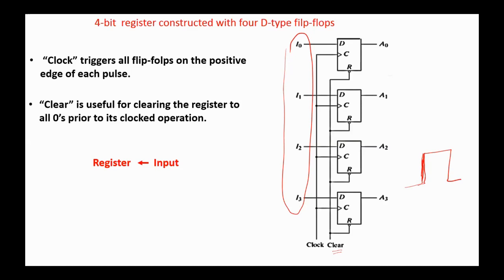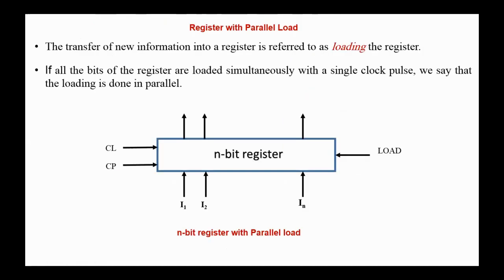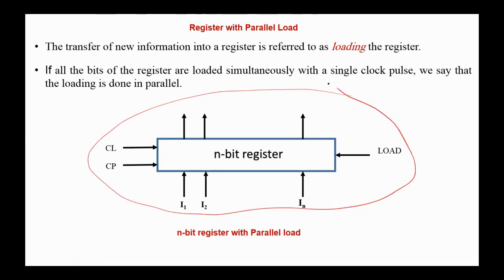As you see in this circuit, we have no control or load signal applied to the flip-flop. This is the general structure of an N-bit register with parallel load. It has N inputs and, in addition to the clear and the clock pulse signals, a load signal.